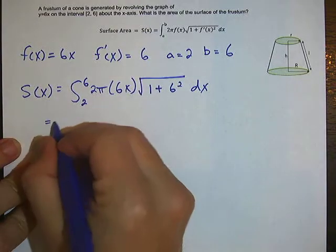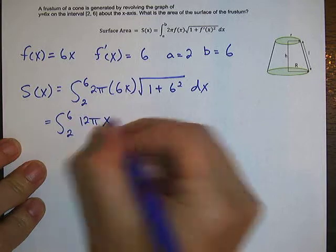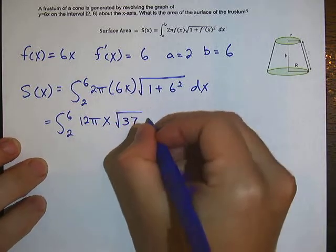Let's clean that up a little bit. So it's still the integral from 2 to 6 of 12 pi x square root 37 dx.